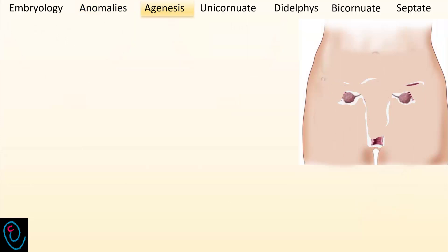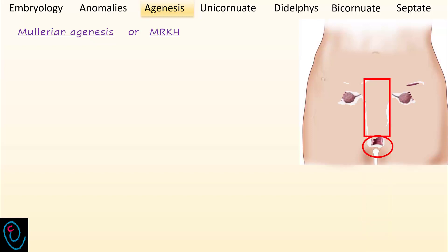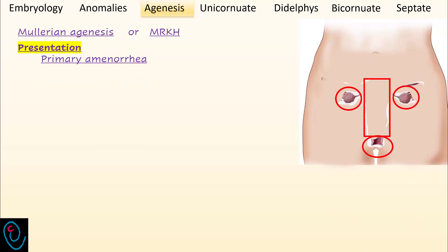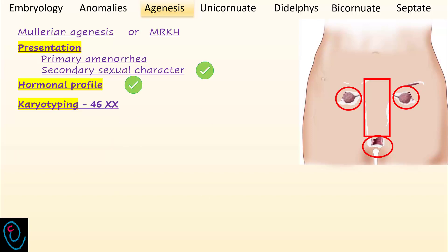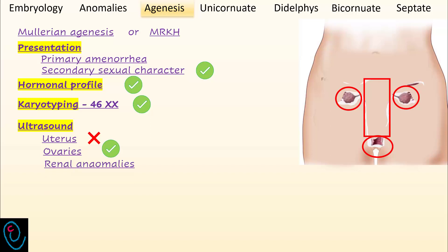Congenital absence of both uterus and vagina is termed Müllerian agenesis, or Mayer-Rokitansky-Küster-Hauser syndrome. In its classic form, the patient has a shallow vaginal pouch, while the uterus, cervix, and upper part of the vagina are absent. However, normal ovaries are present. The patient presents with primary amenorrhea, and because ovaries are present, secondary sexual characteristics and hormonal profile are normal. Karyotyping is also normal. Ultrasound will reveal absent uterus and normal ovaries; do not forget to look for renal anomalies, as they are present in 15 to 35% of women with Müllerian agenesis.